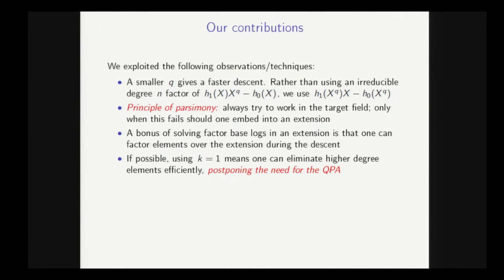And so you need to choose a q larger than n in order to represent such a field. What we did is just choose a slightly subtly different polynomial. So we just bring the q to the inside. This polynomial then has degree q times the degree of H1. And so if we want to represent a field of degree n, we can just choose the degree of the HIs to be greater than 2, such that we get a q which gives us a smaller descent. So that's what we did.